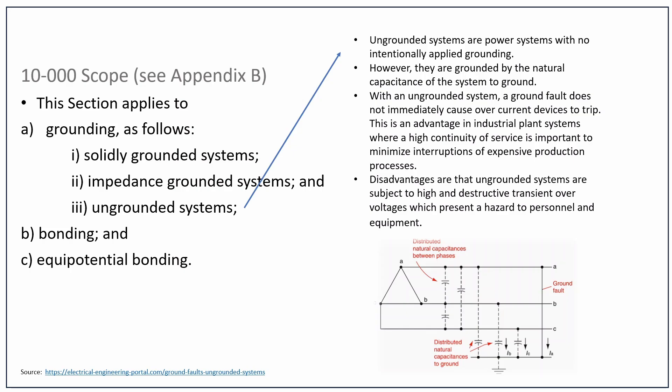Moving on to ungrounded systems — I went with the easiest example, a delta, though there are other ungrounded systems for communication systems that are a bit more complicated. An ungrounded system is similar to a delta where none of the three lines have a reference to ground — this is not the delta where one of the phases is grounded. Ungrounded systems are power systems with no intentionally applied grounding; however, they are grounded by the natural capacitance of the system to ground. Every conductor in that delta system essentially becomes a capacitor in comparison to ground. With an ungrounded system, a ground fault does not immediately cause overcurrent devices to trip, which is an advantage in industrial plant systems where high continuity of service is important to minimize interruptions of expensive production processes.